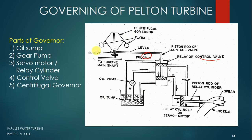Next is the centrifugal governor, which you may have seen in the theory of machines. It contains fly balls. When the rotation of the governor increases, the fly balls move up, and as the fly balls move up they take the sleeve along with them, so the sleeve also moves upward. This sleeve is connected to the lever, so when the sleeve moves upward the lever also moves upward. This centrifugal governor is connected to the turbine by a shaft, so if turbine rotation increases, the governor rotation also increases, and vice versa.